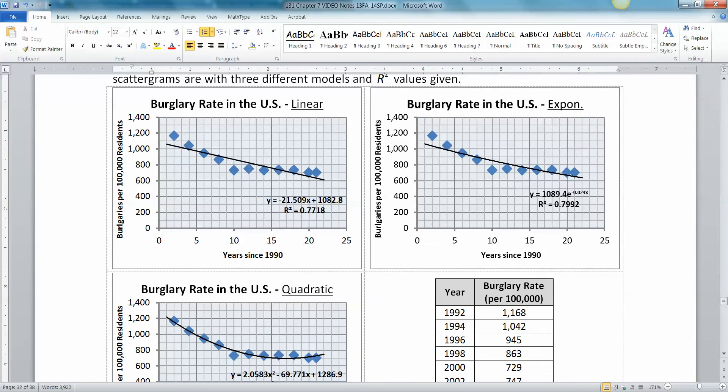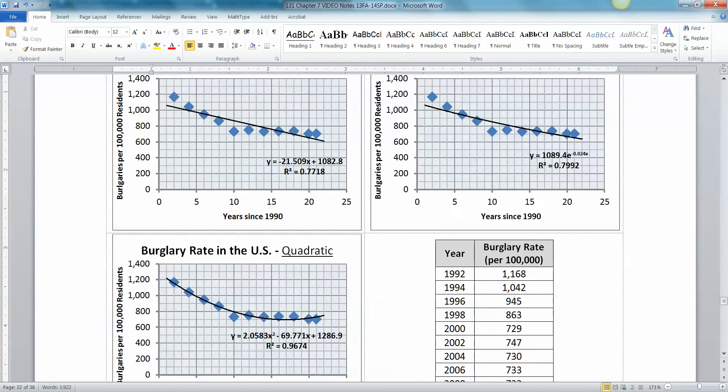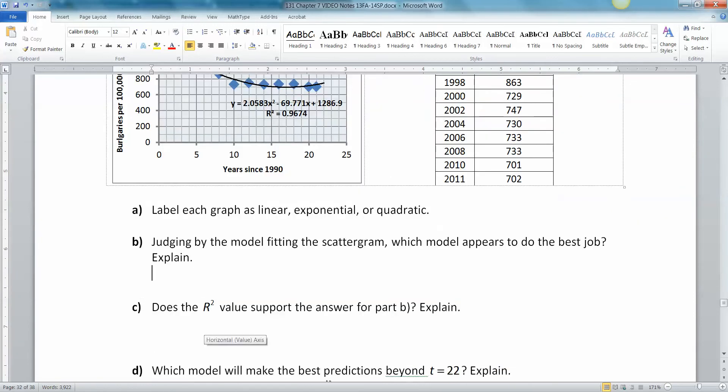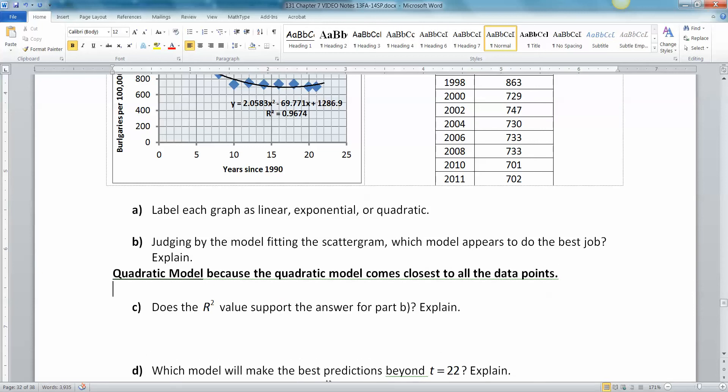So when we look at these three scatter plots, which one appears to do the best job? Explain. I think that's rather obviously the quadratic model, right? The quadratic model comes closest to all the data points.